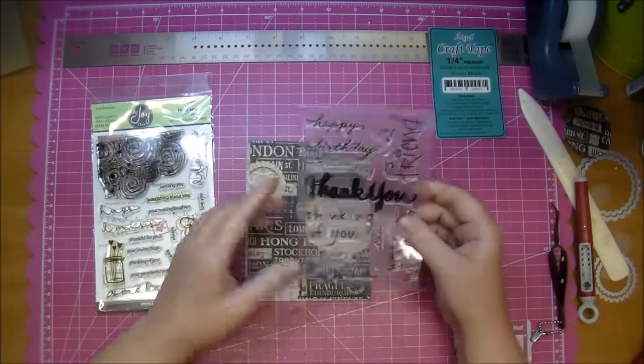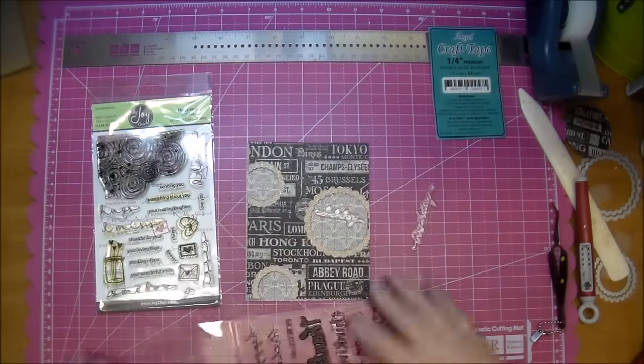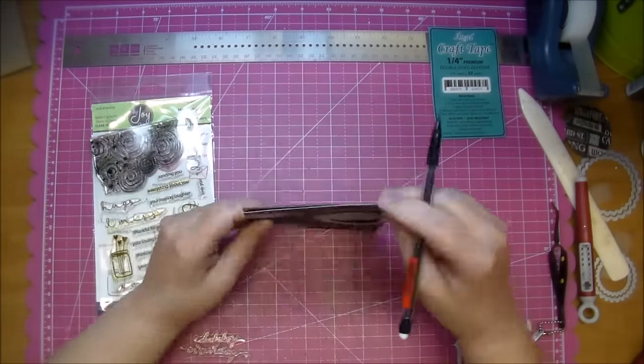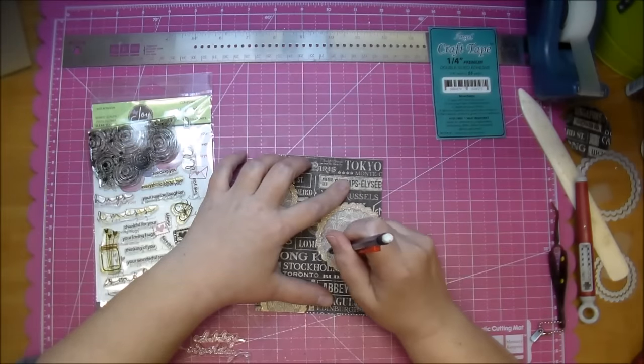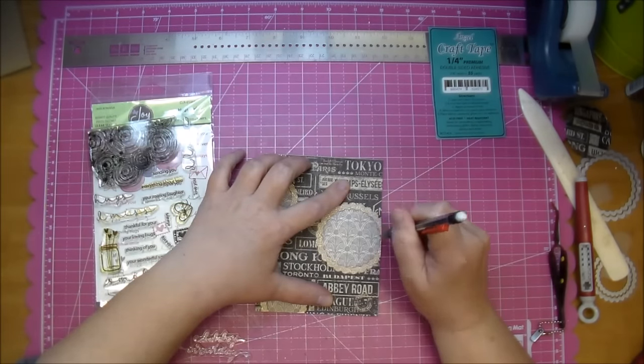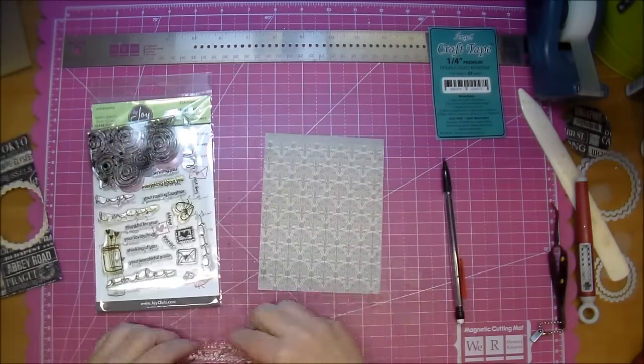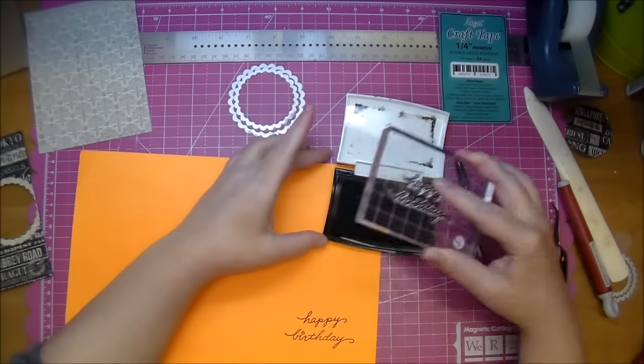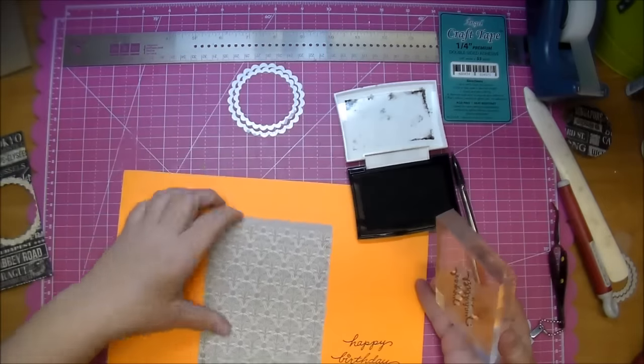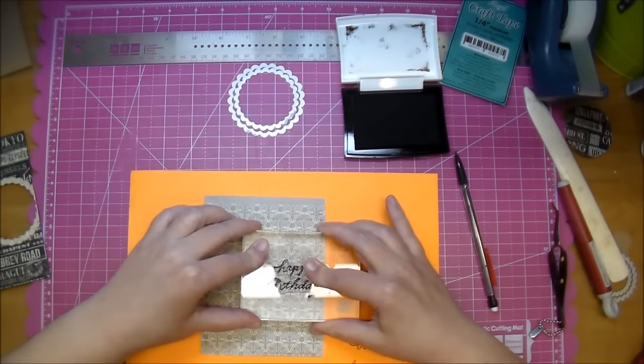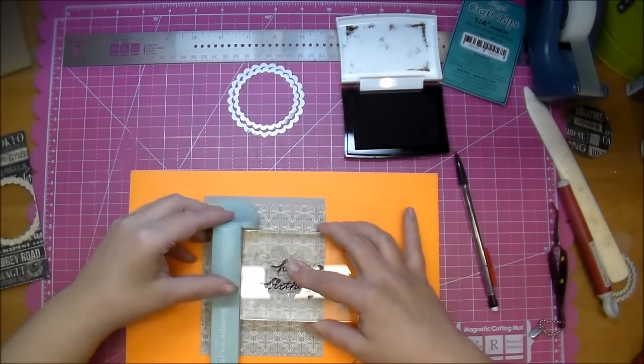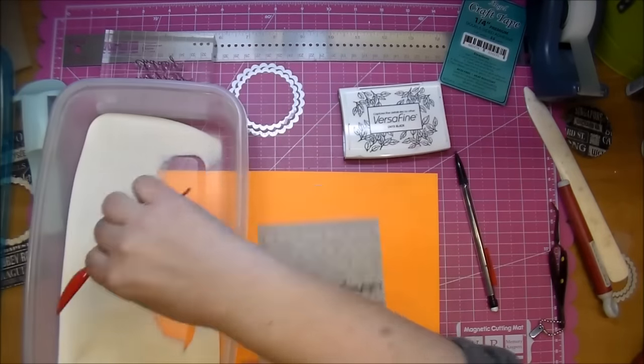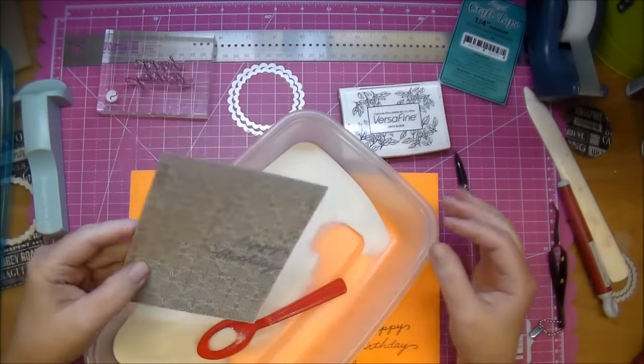I pulled out a couple stamps. A script stamp that says Happy Birthday, and that fits perfectly behind that large die. I'm just kind of marking it with a pencil to make sure that I stay within that spot for when I stamp it. I pulled out some VersaFine Black Onyx ink, and I've never used this stamp before. So I'm stamping it off a couple times on some scratch paper just to condition the stamp. And I did use my Stamp-O-Majig in case I didn't get a good enough impression. I could hurry up and redo it again.